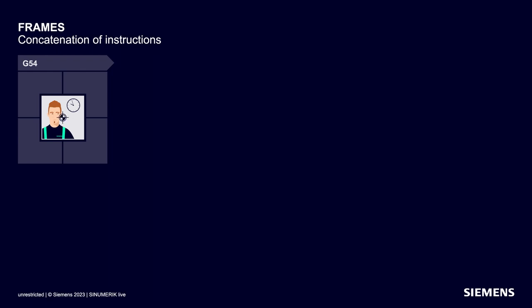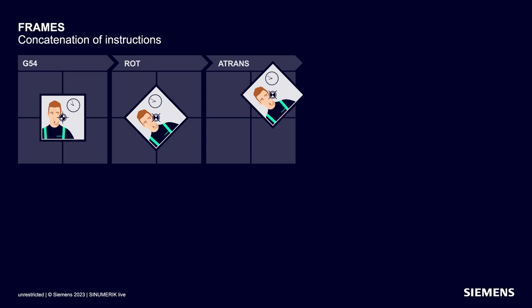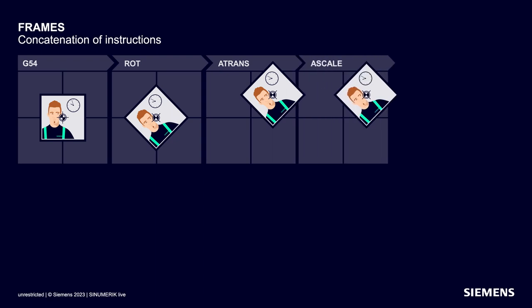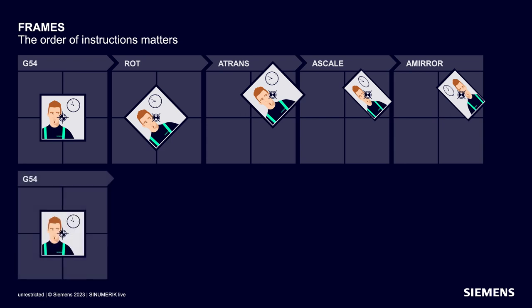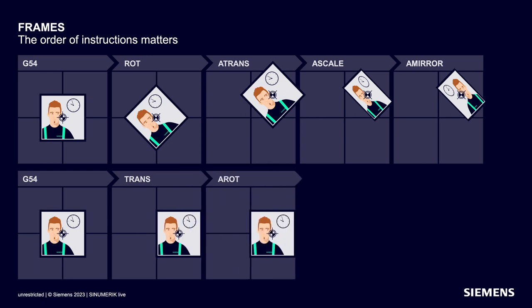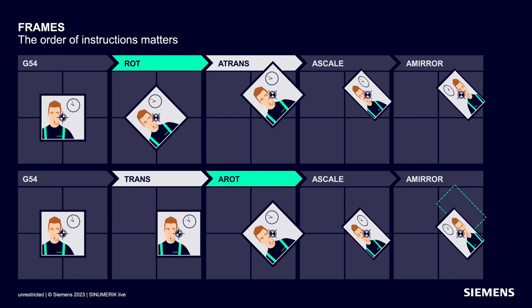Starting here with frame G54, the settable work offset: first, I rotate the image using the rote command. Now I want to shift the rotated image, using the ATRANS command — an additive translation. The whole thing is then scaled additively with ASCALE and finally mirrored additively with AMIRROR. It's important to realize that the order of the additive frame instructions has an effect on the final result. Changing the order leads to a different end result.